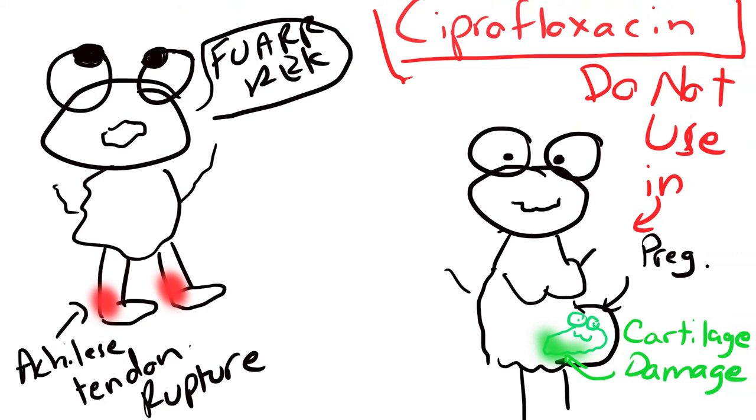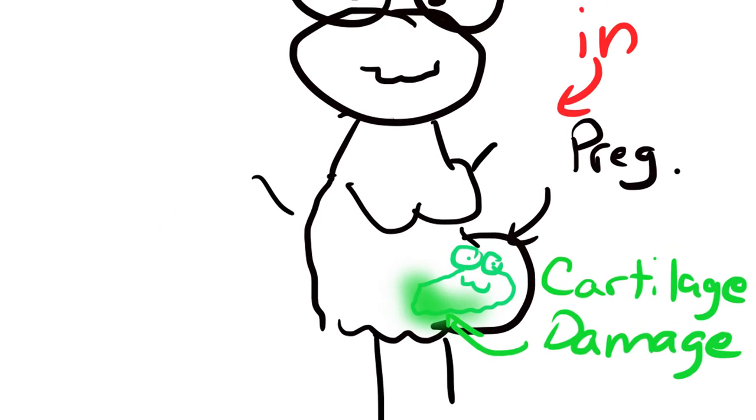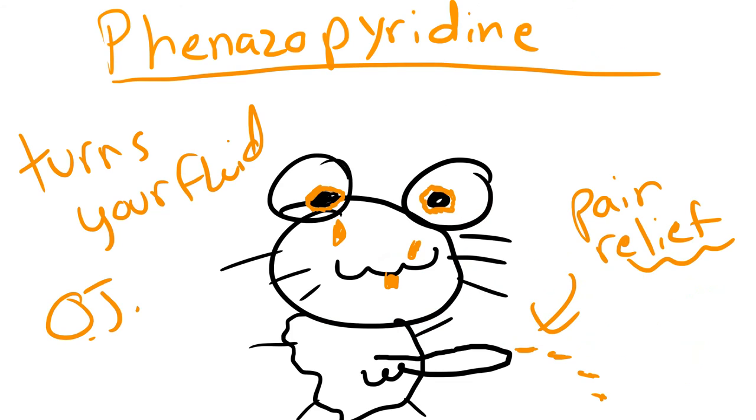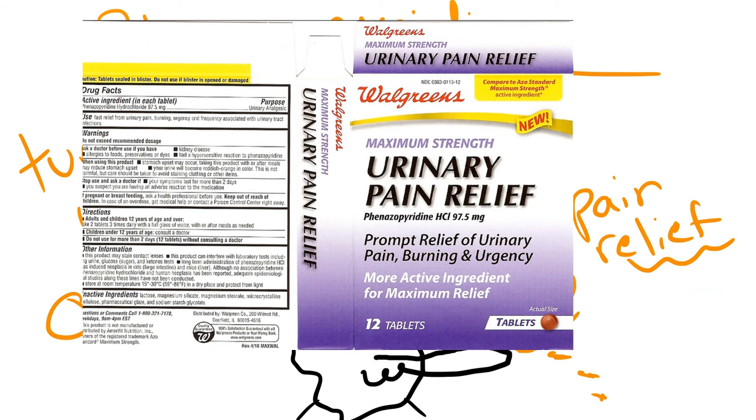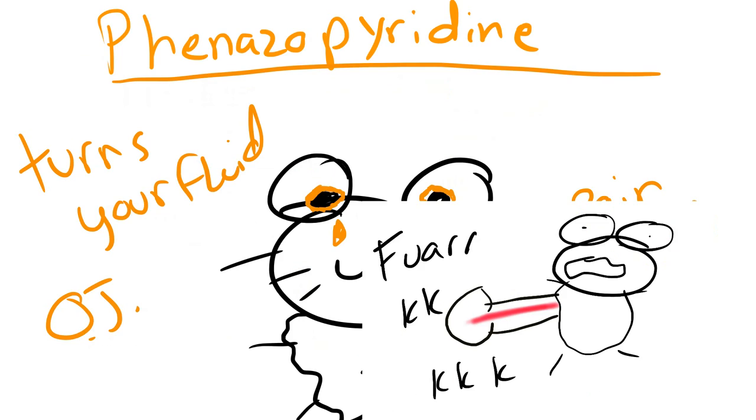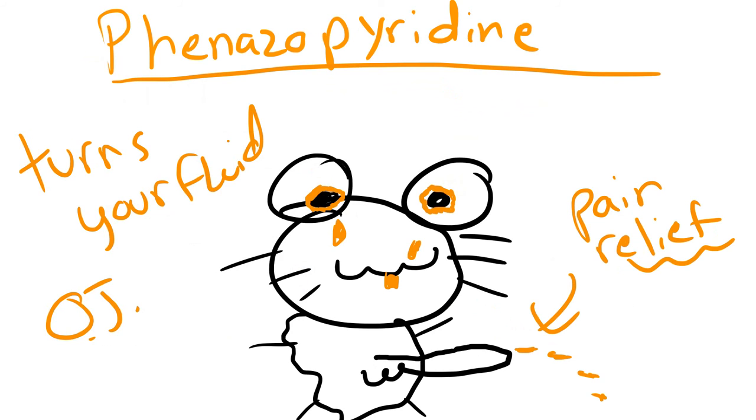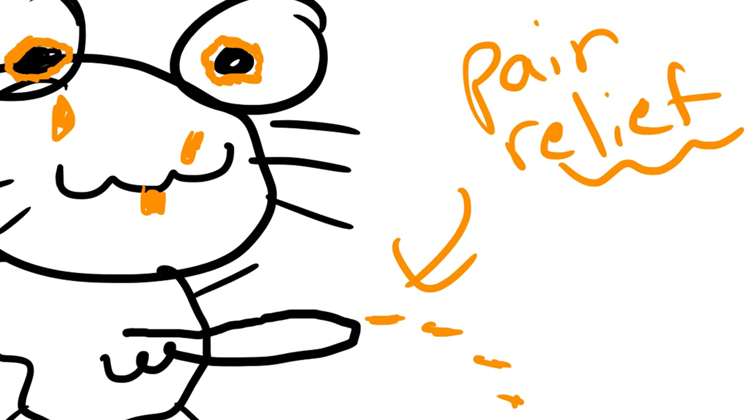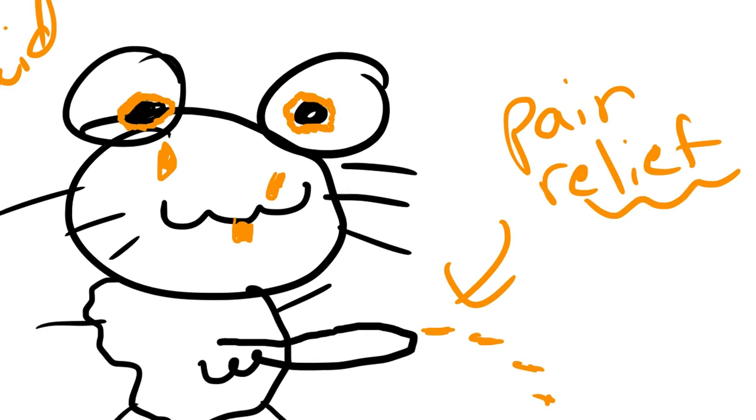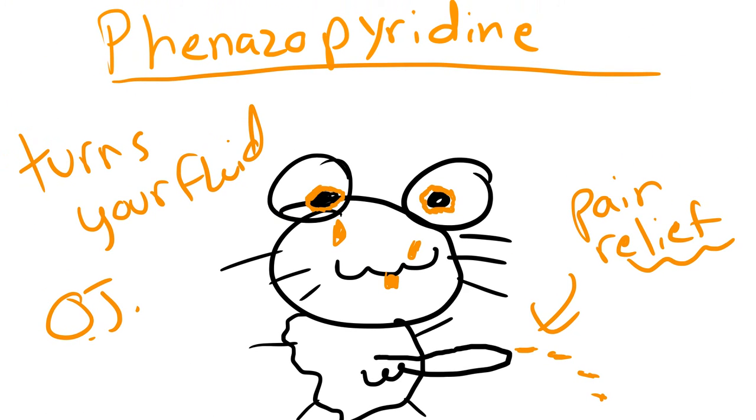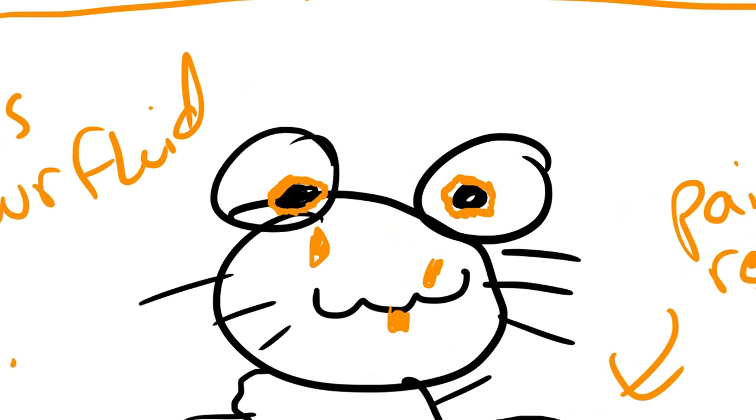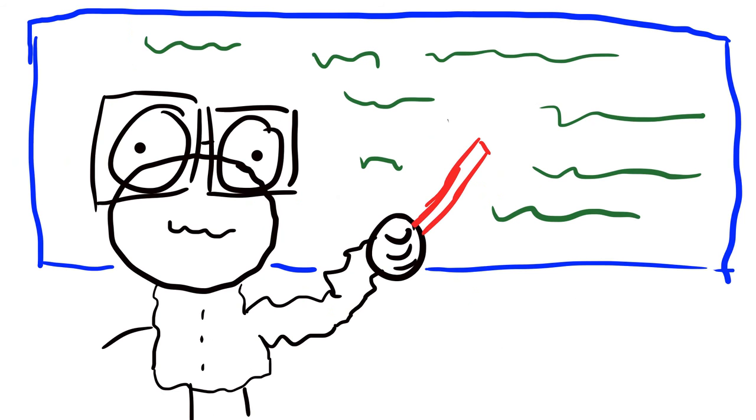Other treatments: you can also use phenazopyridine, which can help relieve the symptoms of UTI. It acts as a local analgesic. It will change your urine to a dark orange color, but that's nothing really to worry about. Also, it can turn other body fluids orange, so if the patient wears contact lenses, you want to tell them to hold off for a while until they're done taking the drug, otherwise they're gonna stain their contact lenses orange, and that's gonna be bad.